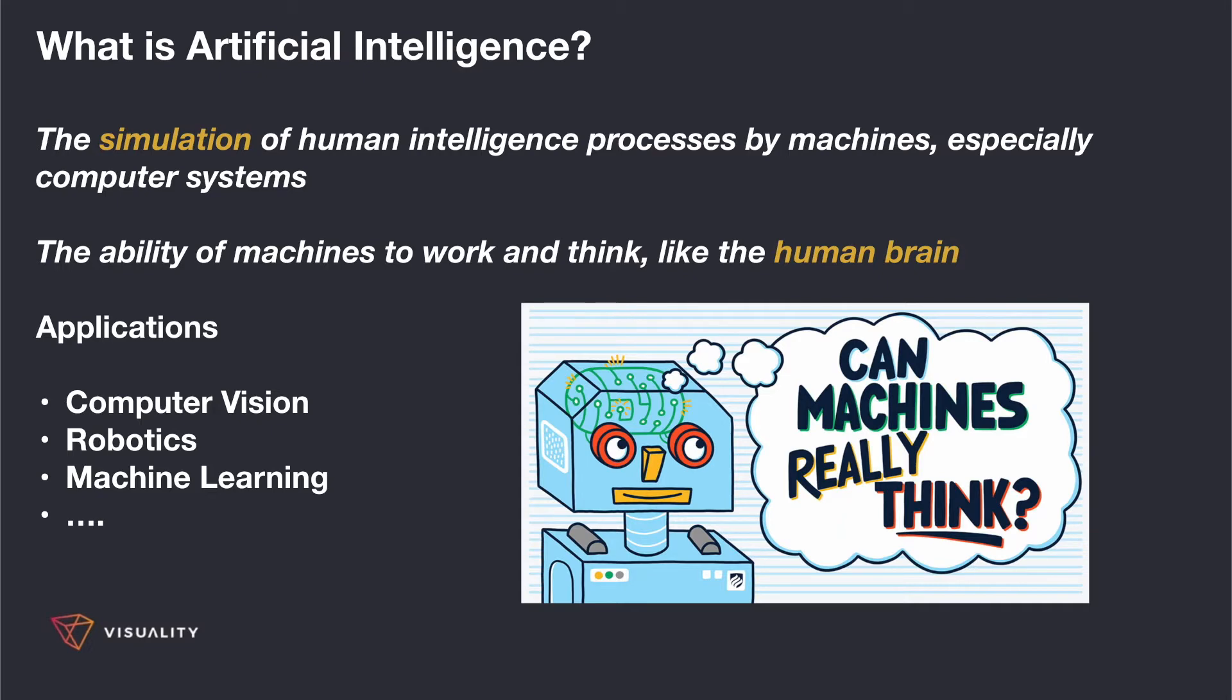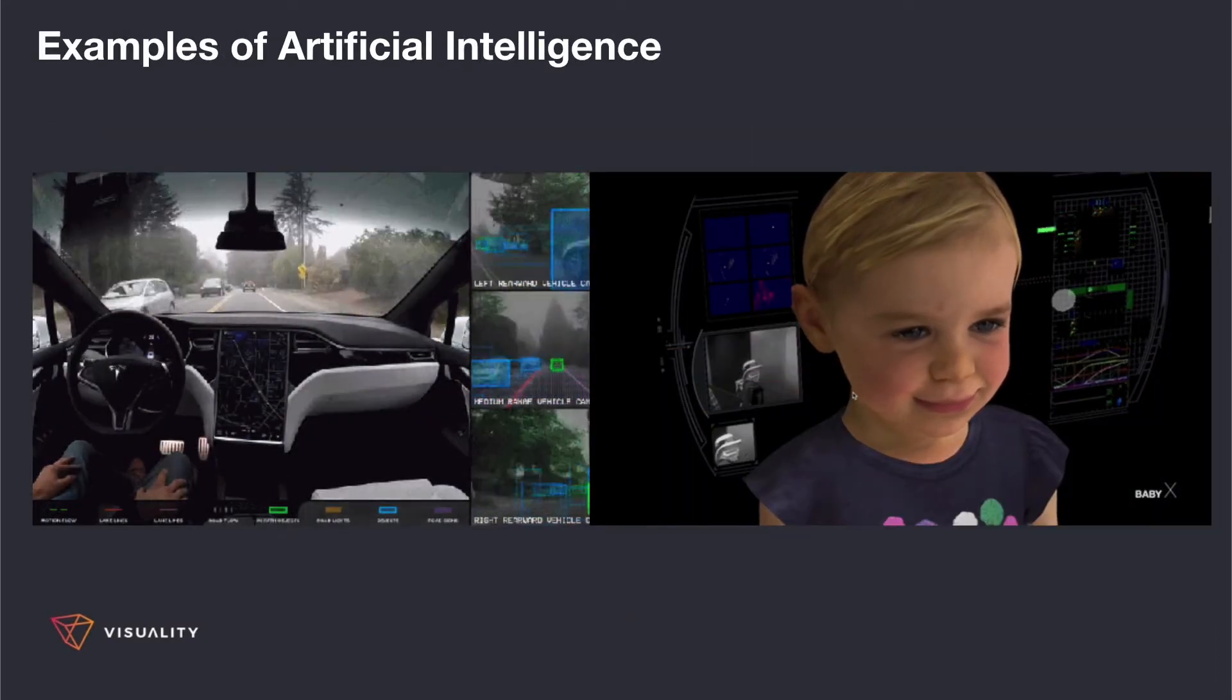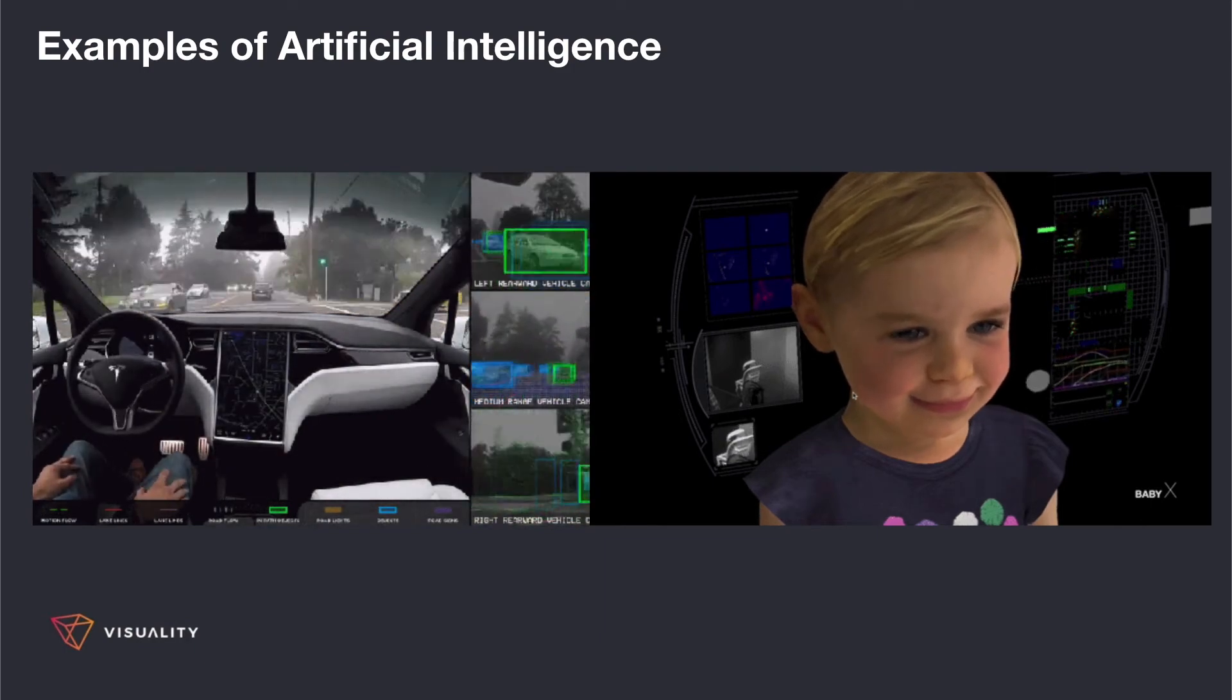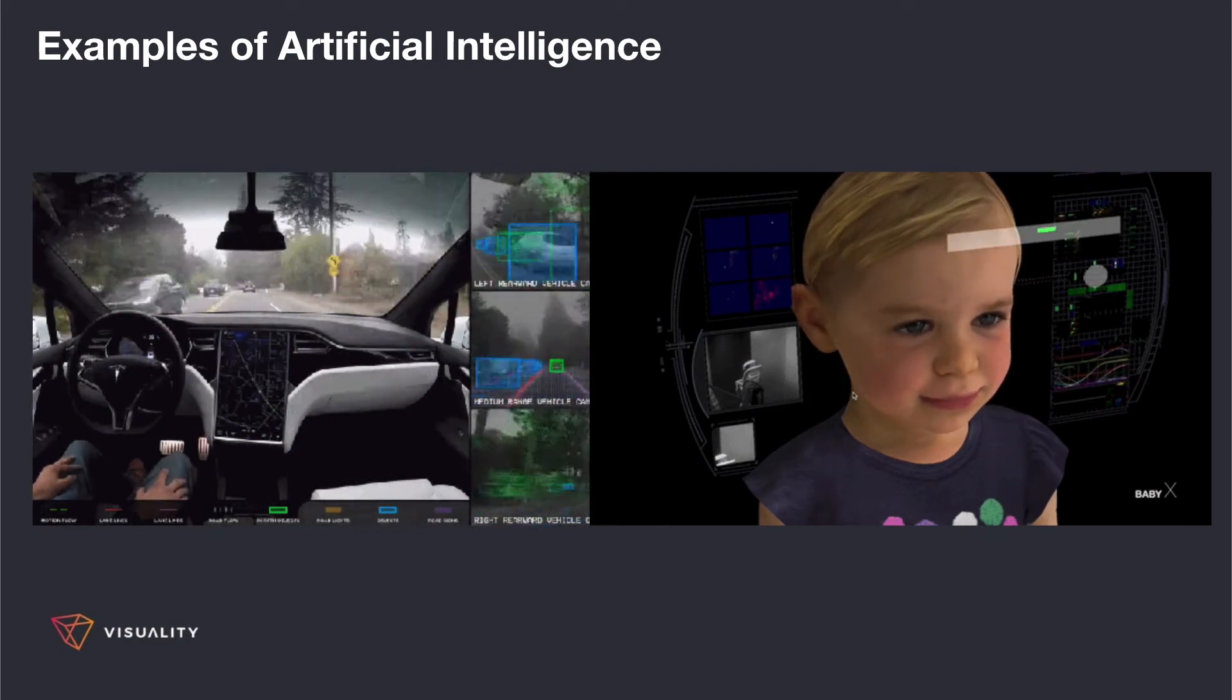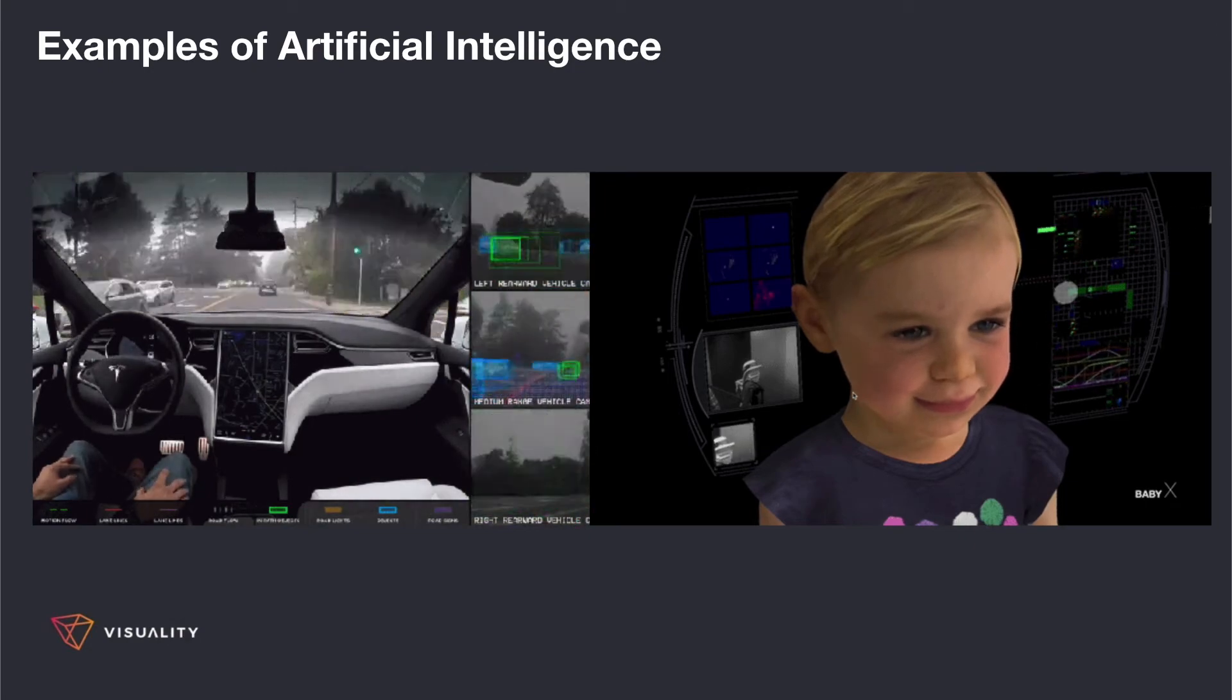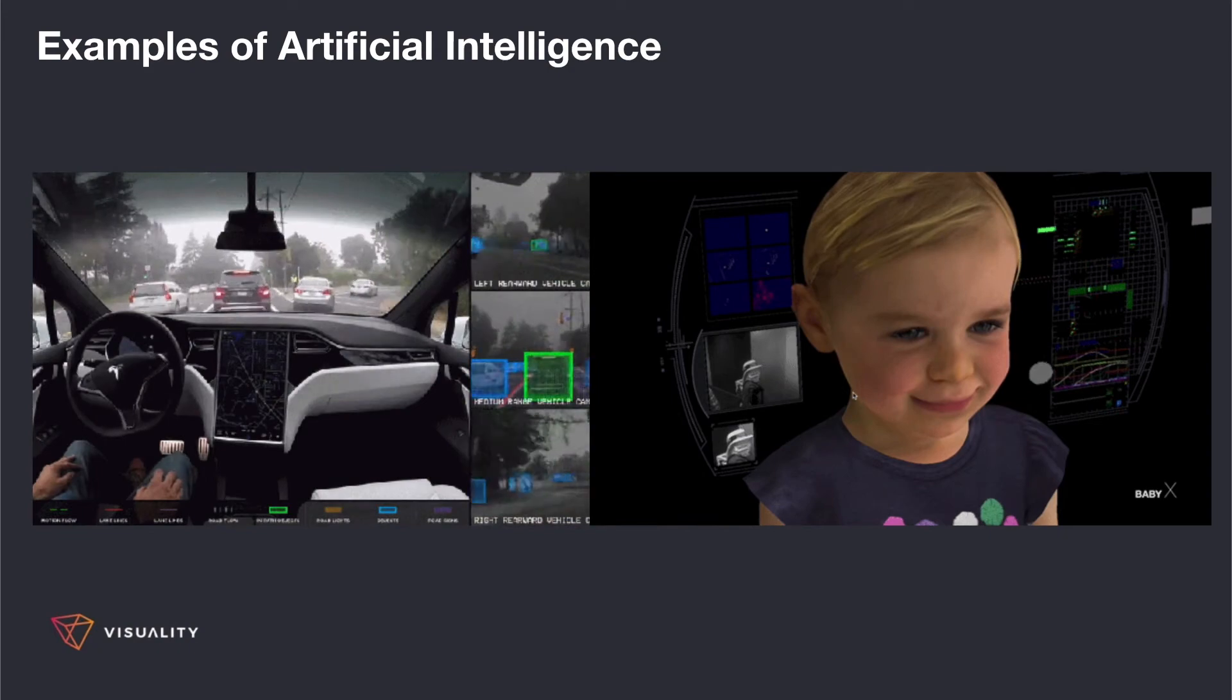It is unquestionable that self-driving technology will be part of our future. Self-driving cars combine a variety of sensors to perceive their surroundings, such as radar, lidar, sonar, or GPS. One of the examples, as it is seen from the left images, is Tesla cars.